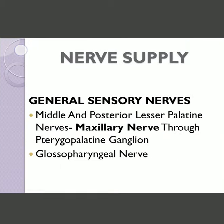Regarding nerve supply of the soft palate: the motor supply will be discussed with the muscles of the soft palate and is basically by the pharyngeal plexus, except for one muscle. The general sensory nerve is the maxillary nerve, which gives the middle and posterior lesser palatine branches for general sensation, along with the glossopharyngeal nerve.